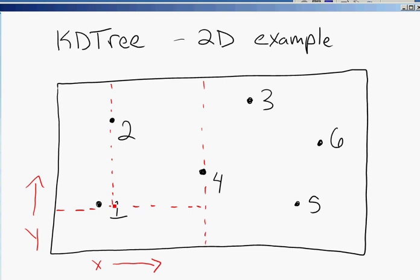Continuing on, we have to recursively process this 3, 5, and 6. Now this is a little easier, since we have an odd number of points. We can pick the median of the Y dimension, and we see it's 6, just like that.